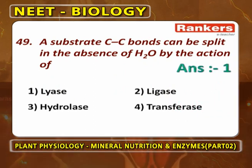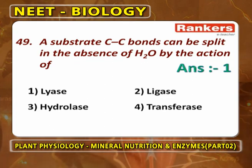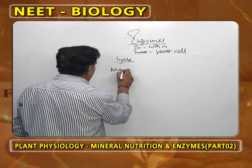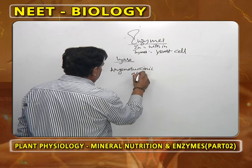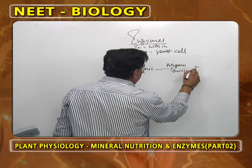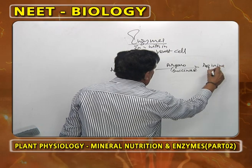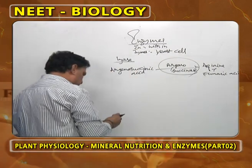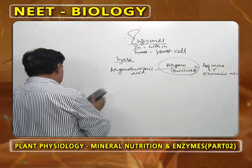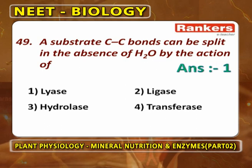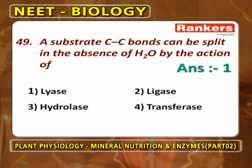A substrate with carbon-carbon bonds can be split in the absence of water by the action of lyases. There is an enzyme called lyase which helps in breaking compounds without the addition of water. The best example is arginosuccinic acid, which in the presence of arginosuccinase produces arginine and fumaric acid. Arginosuccinase comes under the category of lyases — enzymes that break carbon-carbon bonds in the absence of water.